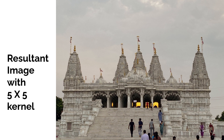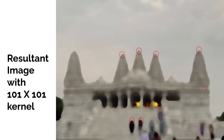You might ask: if the median filter is perfect, what happens with a bigger kernel? Using a kernel of 101×101, because the kernel is bigger than some features, we lose smaller features like the heads of people or flags of the temple, as those smaller features are treated as noise and removed by the median filter.